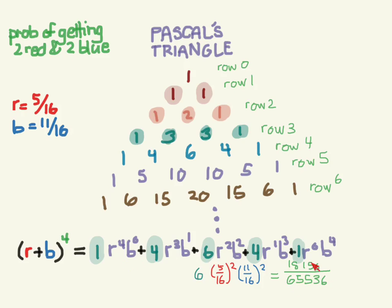With this formula, if I asked you what is the chance of getting three reds and one blue, or all blues, or all reds, or one red and three blues, you could calculate that pretty quickly.